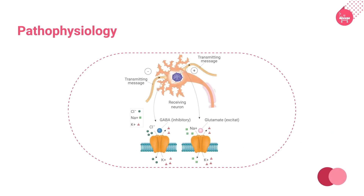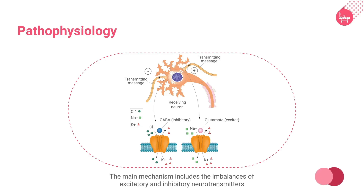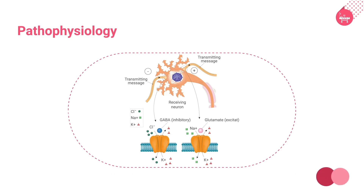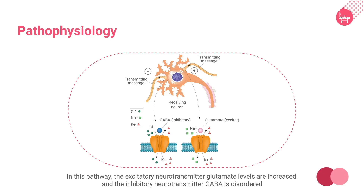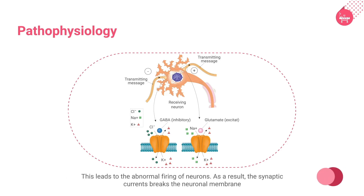Now let us try and understand the disease process of epilepsy. The pathophysiology of epilepsy involves many pathways and it is difficult to understand the entire disease process under one heading, so let us understand each pathological process in detail. The main mechanism includes the imbalances of excitatory and inhibitory neurotransmitters. In this pathway, the excitatory neurotransmitter glutamate levels are increased and the inhibitory neurotransmitter GABA is disordered, leading to the abnormal firing of neurons. As a result, the synaptic currents break the neuronal membrane.